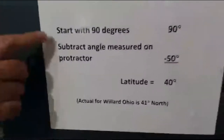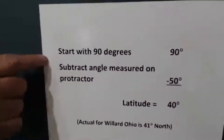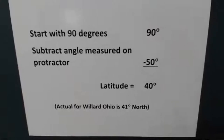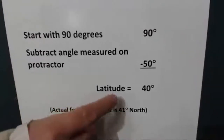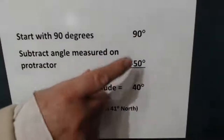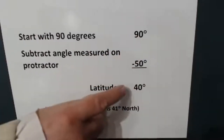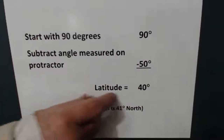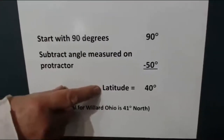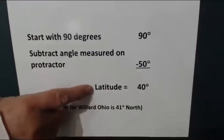Here's how to calculate your latitude: start with 90 degrees and subtract whatever number you read on the protractor. If the protractor showed 50 degrees, then 90 minus 50 equals 40 — and that is your latitude, indicating how far south of the north pole you are.